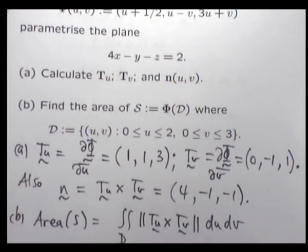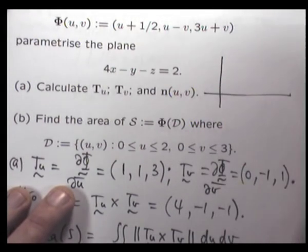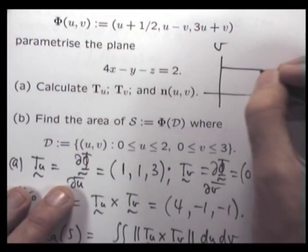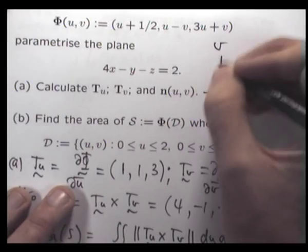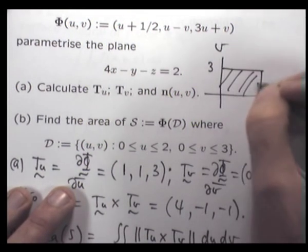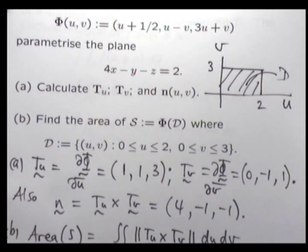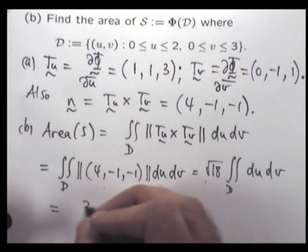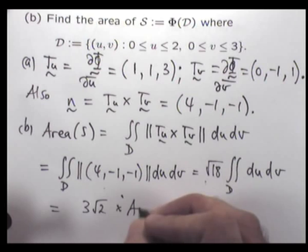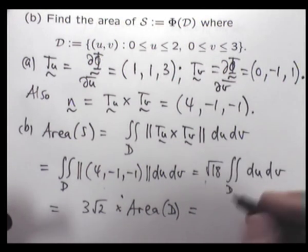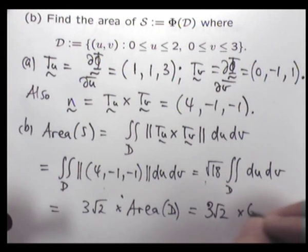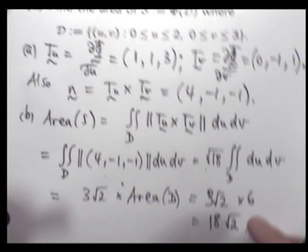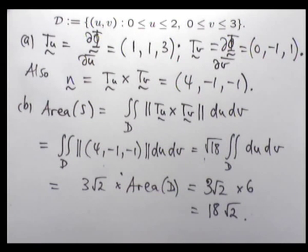Let me draw in the parameter domain. It's just 3 root 2 times the area of D, and the area of D is just 6. So the surface area of our surface is 18 root 2 square units.